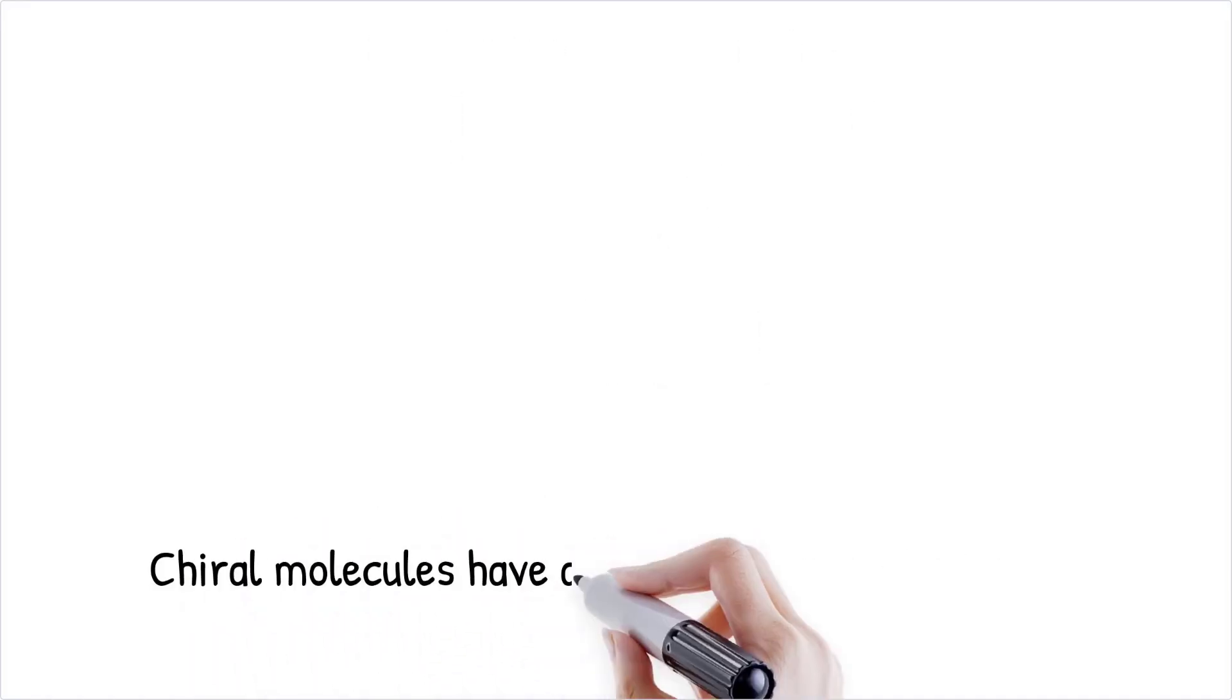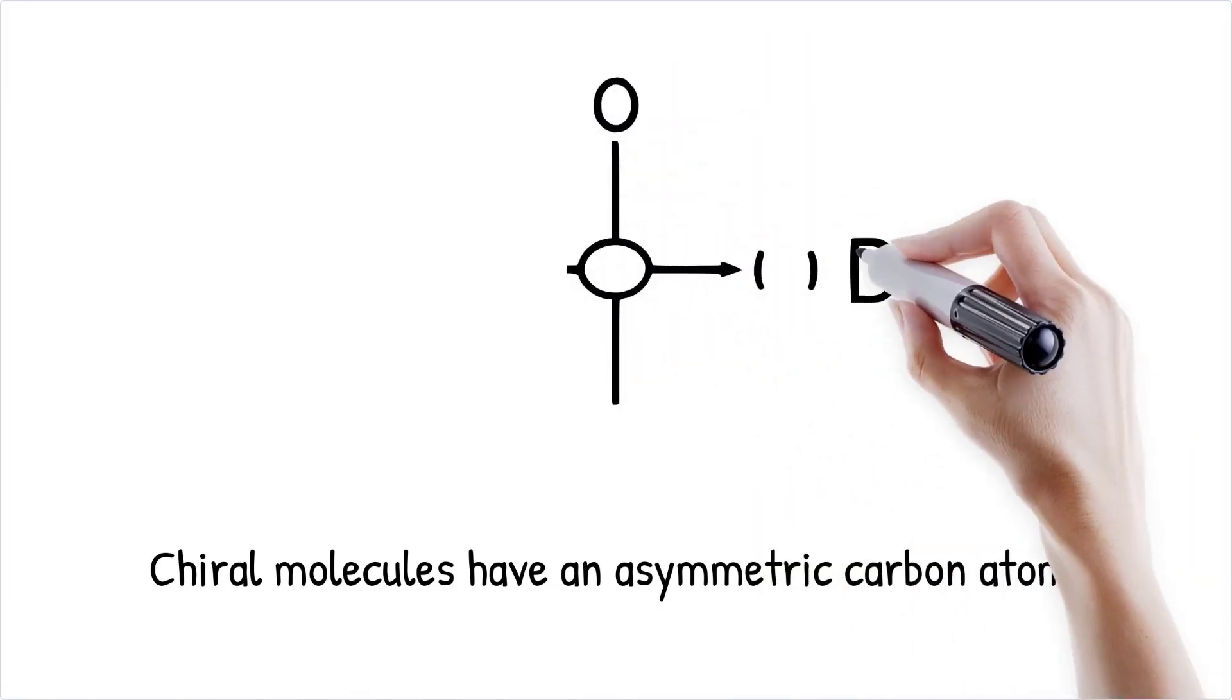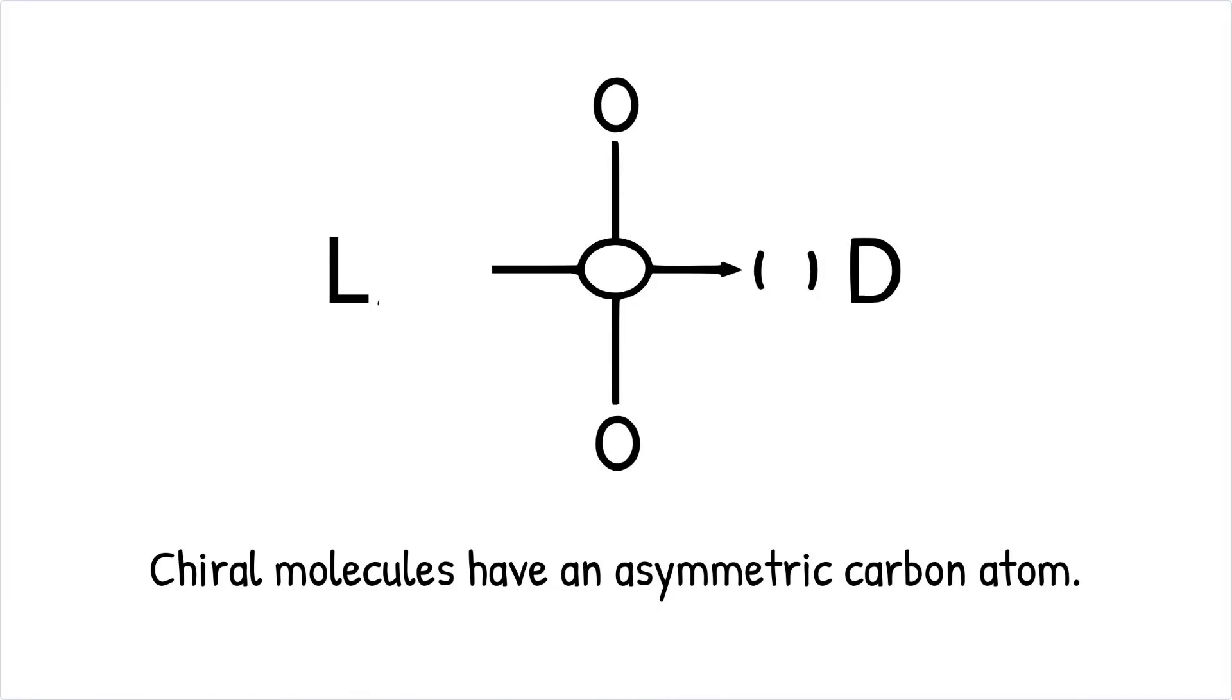A molecule is chiral if it has an asymmetric carbon atom, also known as a chiral center. This carbon atom is bonded to four different groups or atoms, creating two possible spatial arrangements that are mirror images of each other. These two arrangements are the enantiomers, often labeled as L (left-handed) and D (right-handed).